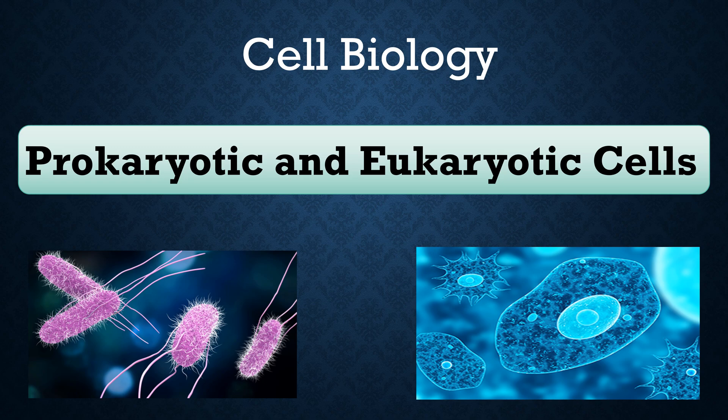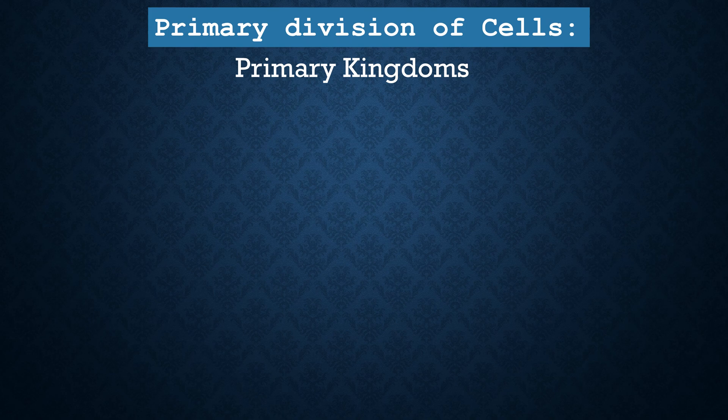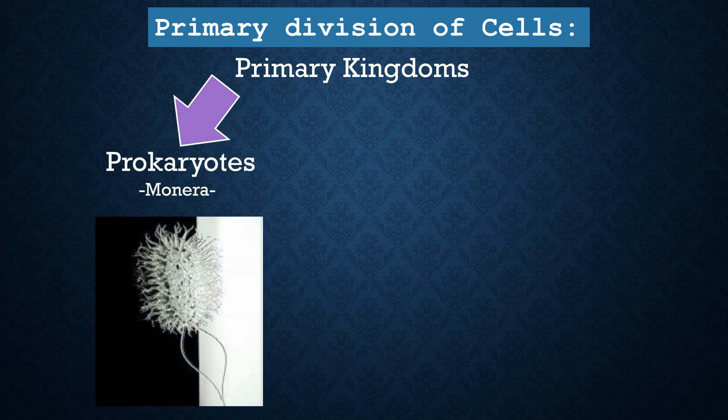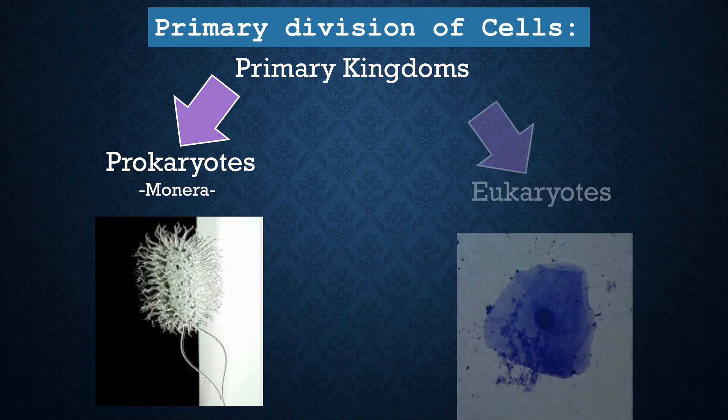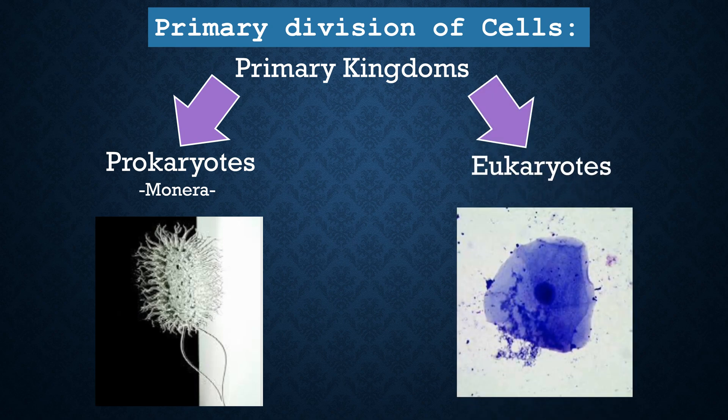Hello, today we will study prokaryotic and eukaryotic cells. The oldest and primary division of cells is into two primary kingdoms: the kingdom of prokaryotes, also called Monera, and that of eukaryotes.